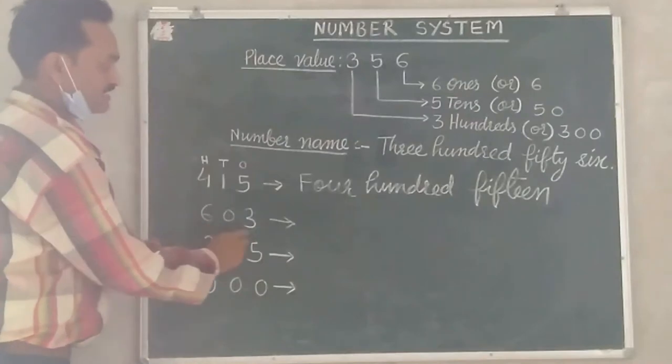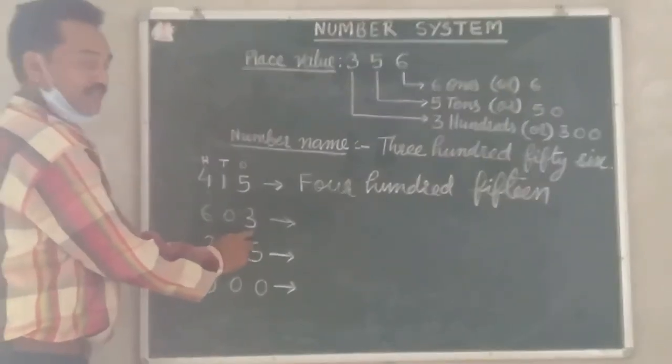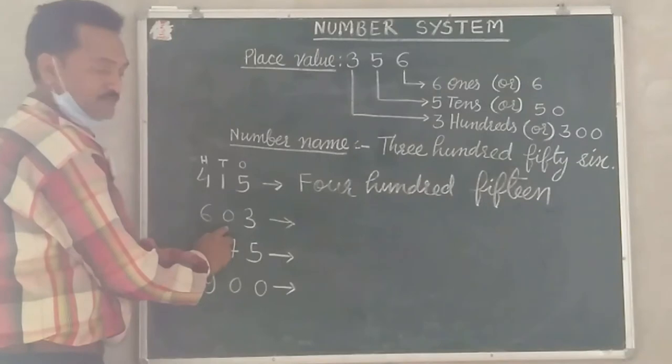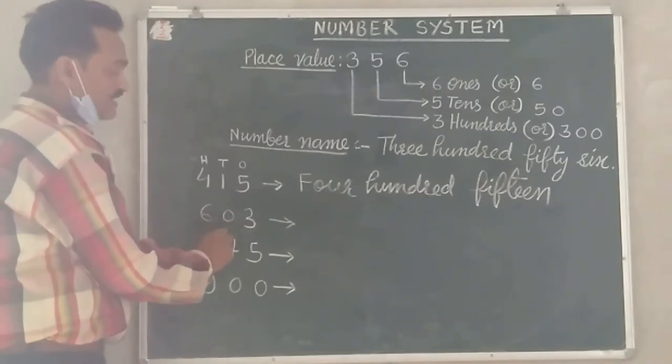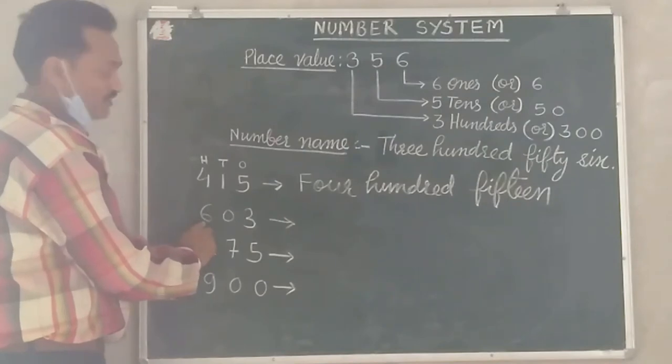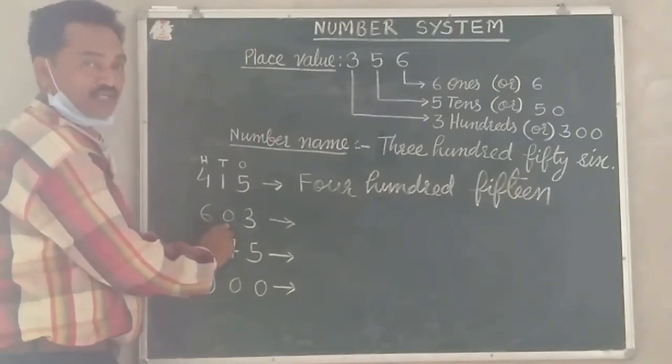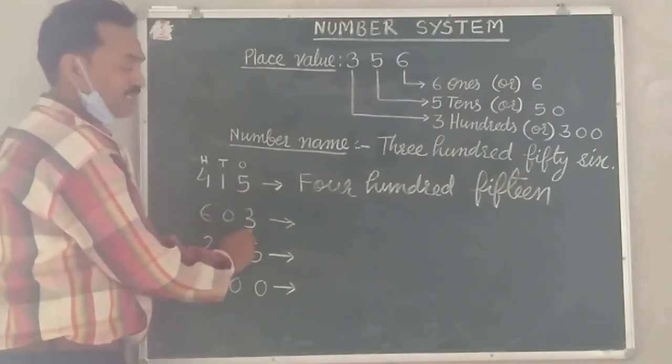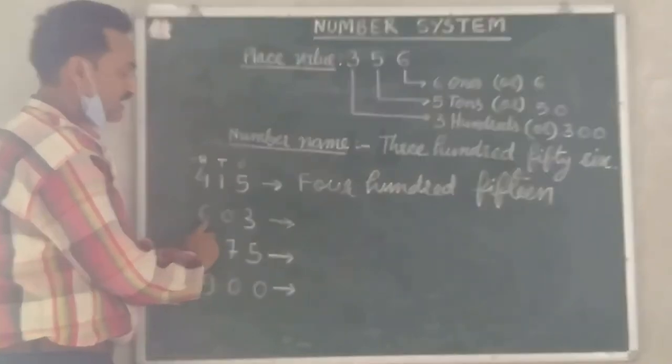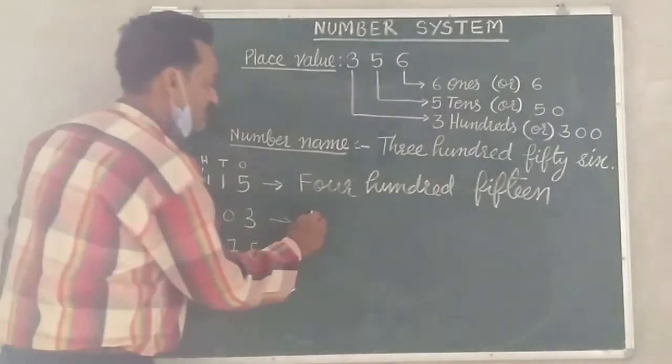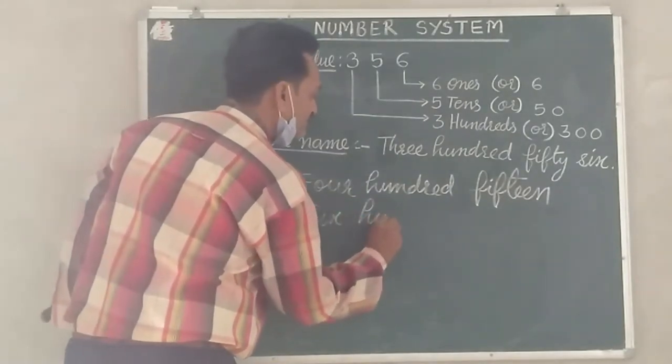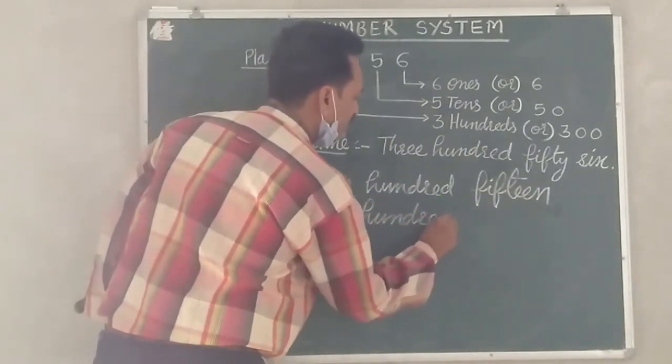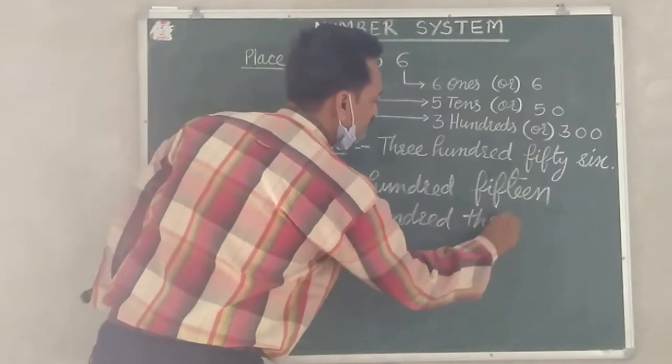As we can see that 3 ones, 0 tens, and 6 hundreds. So 600, 0 tens, and 3 ones, then we can see that 603. So we can see 603.